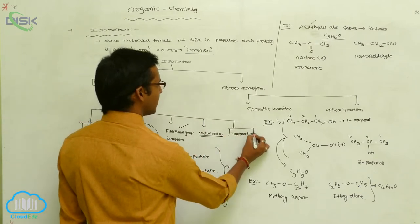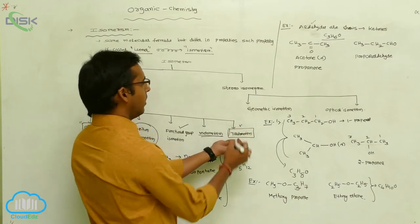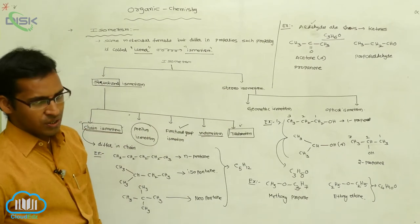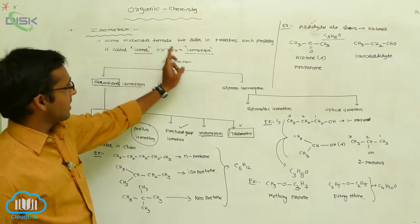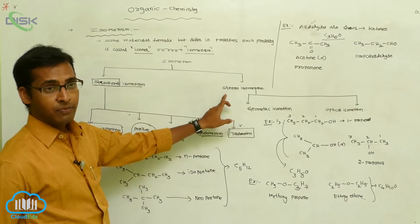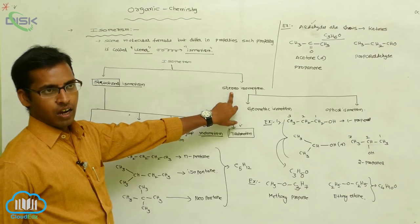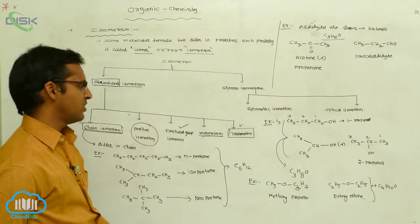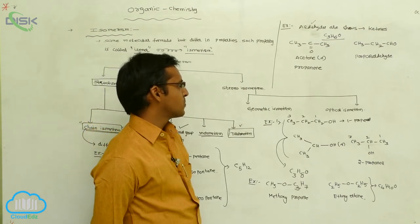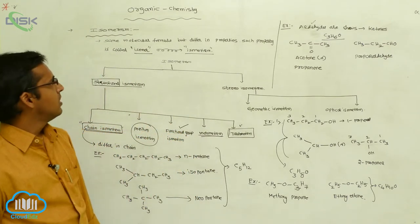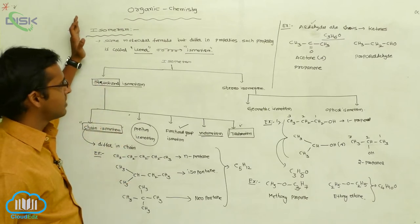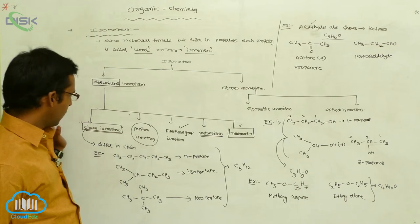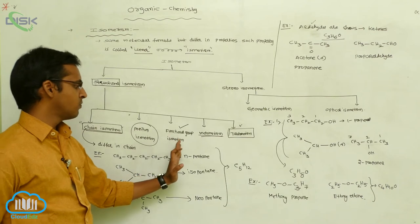Tautomerism is not needed because in your first-year syllabus, tautomerism is not included. The next type is stereoisomerism. Structural isomerism is now completed. Stereoisomerism means compounds have the same molecular formula but differ in the arrangement of constituent particles in three-dimensional space. Stereoisomerism is classified into two types: geometrical isomerism and optical isomerism. So this is the classification of isomerism — structural isomerism covers chain isomerism, positional isomerism, functional group isomerism, and metamerism.